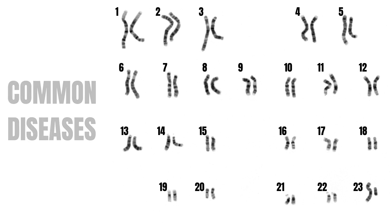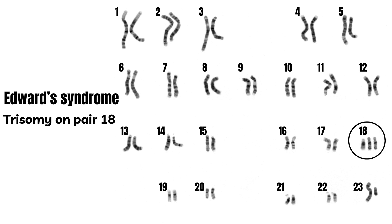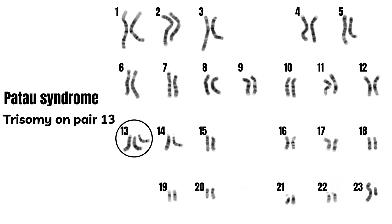Let's walk through five of the more common genetic diseases which can be detected through karyotyping. One: Down syndrome, caused by a third chromosome on pair 21. Two: Edwards syndrome, caused by a third chromosome on pair 18. Three: Patau syndrome, caused by a third chromosome on pair 13. Both Edwards and Patau syndrome are usually fatal.